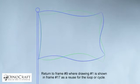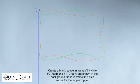Return to frame number 9 where drawing number 1 is shown in frame number 17 as a reuse for the loop or cycle. Create a blank space in frame number 13 while number 9 and number 1 are shown in the background. Number 1 is in frame number 17 as a reuse for the loop or cycle.